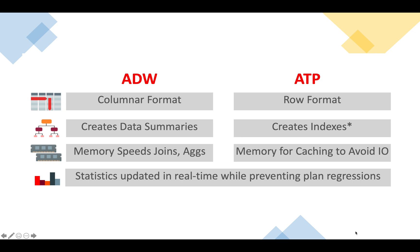As we saw in the previous video, there are two database variants for autonomous databases: ADW, that is Autonomous Data Warehouse, and ATP, that is Autonomous Transaction Processing. The first question that would be coming to your mind is why Oracle has created two different services. ADW is for data warehouse kind of applications and ATP is more of an OLTP kind of application — but what exactly is happening behind the scenes?